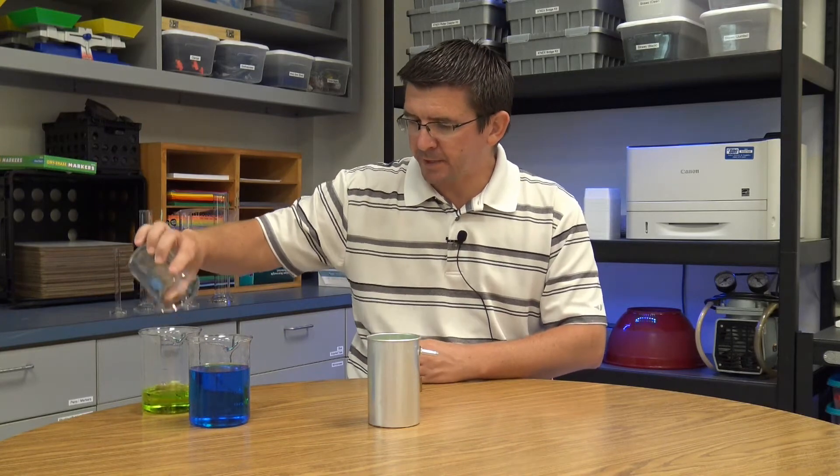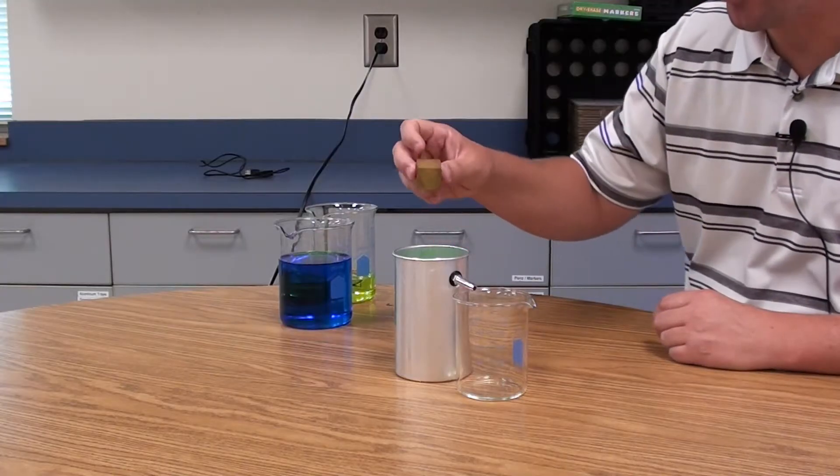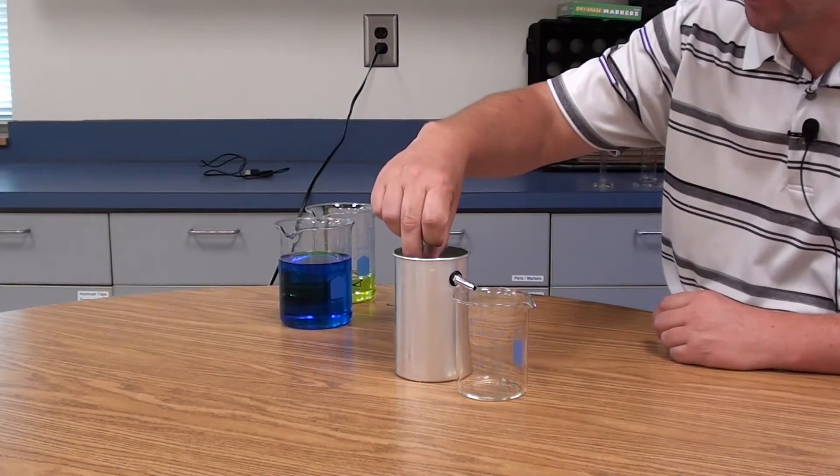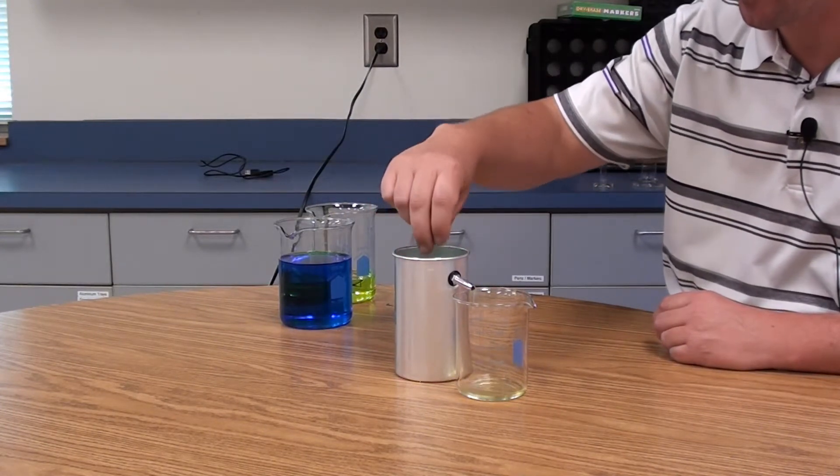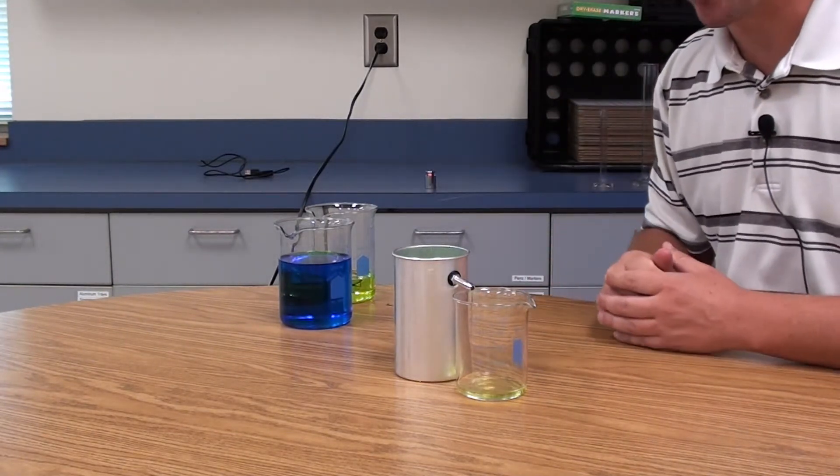Once it does, we're just going to let it flow out for just a minute until it stops. Because once it stops, we know it's exactly even with that spout, which means if we were to add any more water to it from this point, it would also flow out. Now that our overflow can's ready, we're going to empty this excess water and put an empty beaker underneath the spout. Because what we're going to do is actually submerge our object into the water to displace that water, giving us the volume of the cube. So all we have to do is just carefully place the cube in the water.